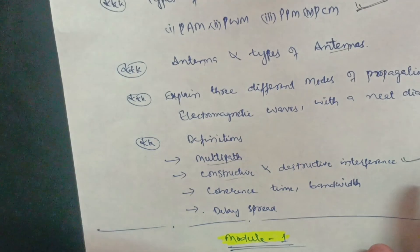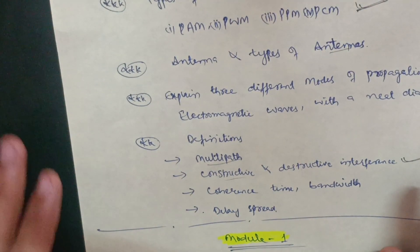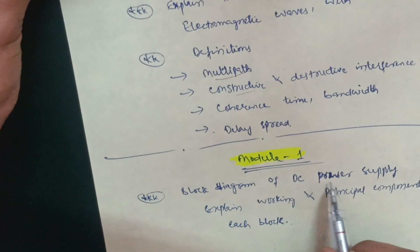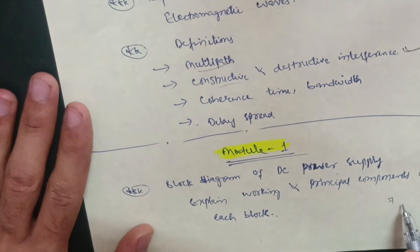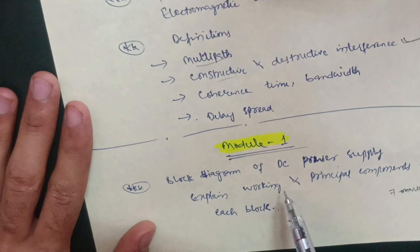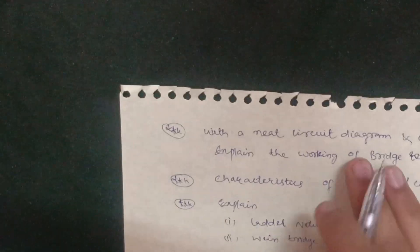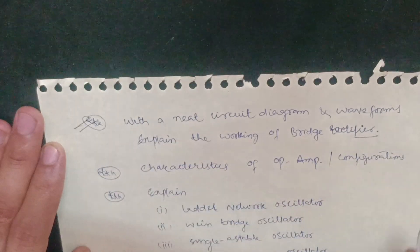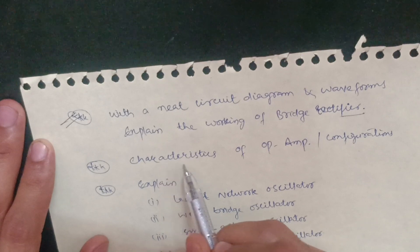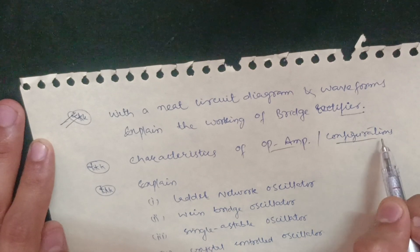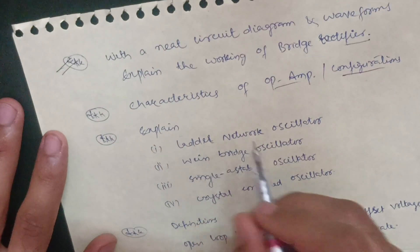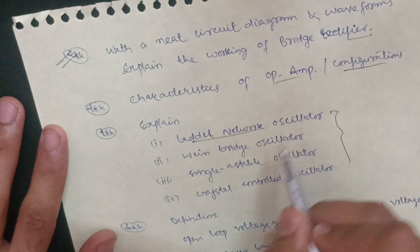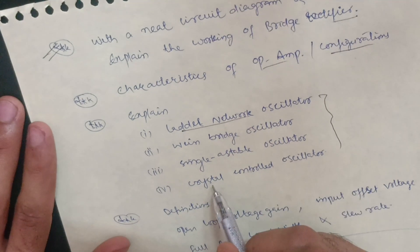For the remaining modules — Module 1 and Module 2 — I have taken five questions but you can refer to only three questions from each module. In Module 1, the block diagram of the DC power supply is a seven-mark question and is definitely asked — cover the working and principal components of each block. Next, with a neat circuit diagram and waveforms, explain the working of the bridge rectifier, which is the most frequently asked question. Also cover characteristics of the op-amp — operational amplifier parameters and its configurations. Among the four oscillator types — ladder network oscillator, Wien bridge oscillator, single astable oscillator, and crystal-controlled oscillator — at least one or two will appear in the examination.